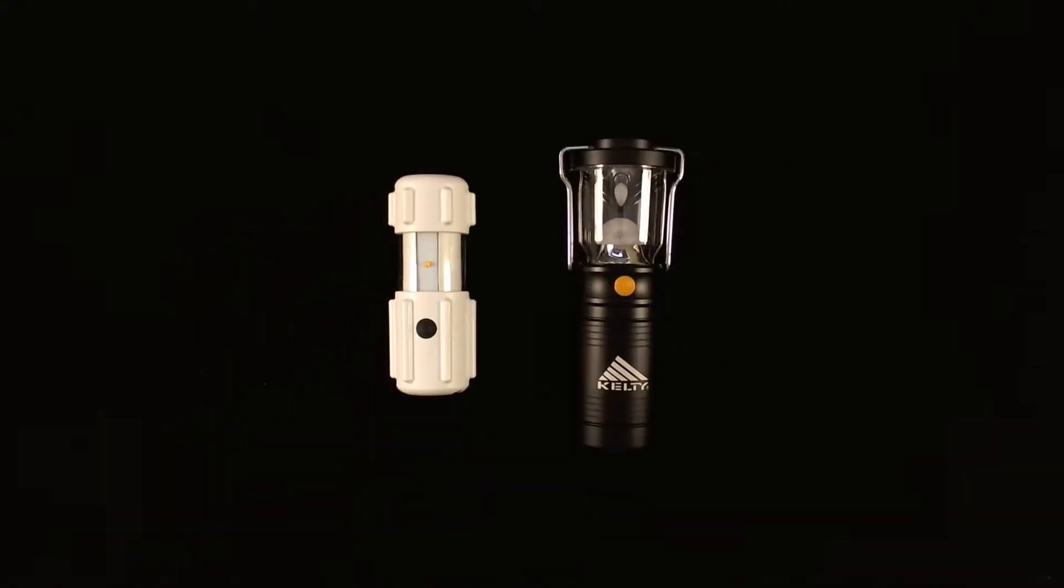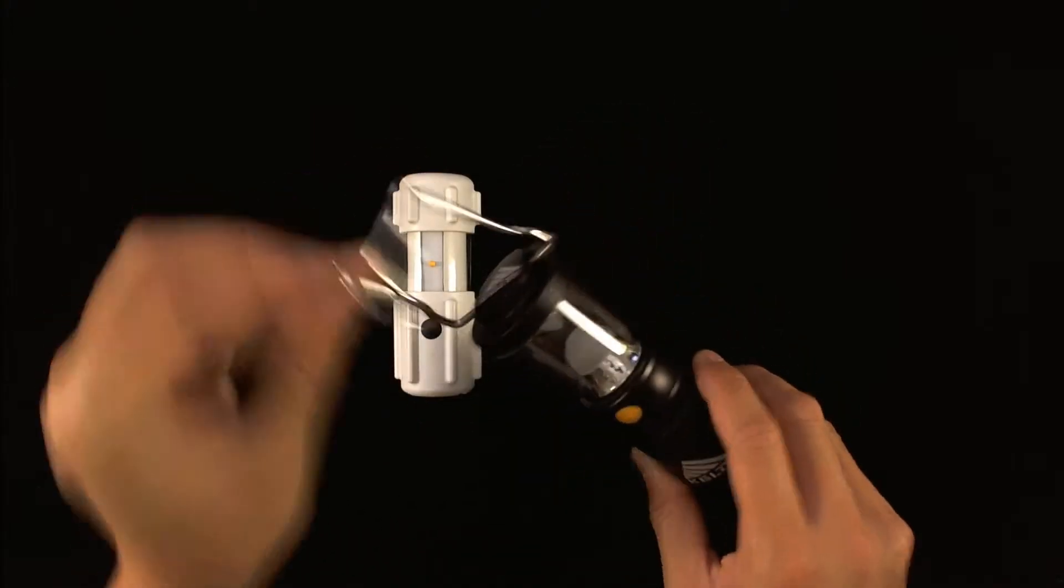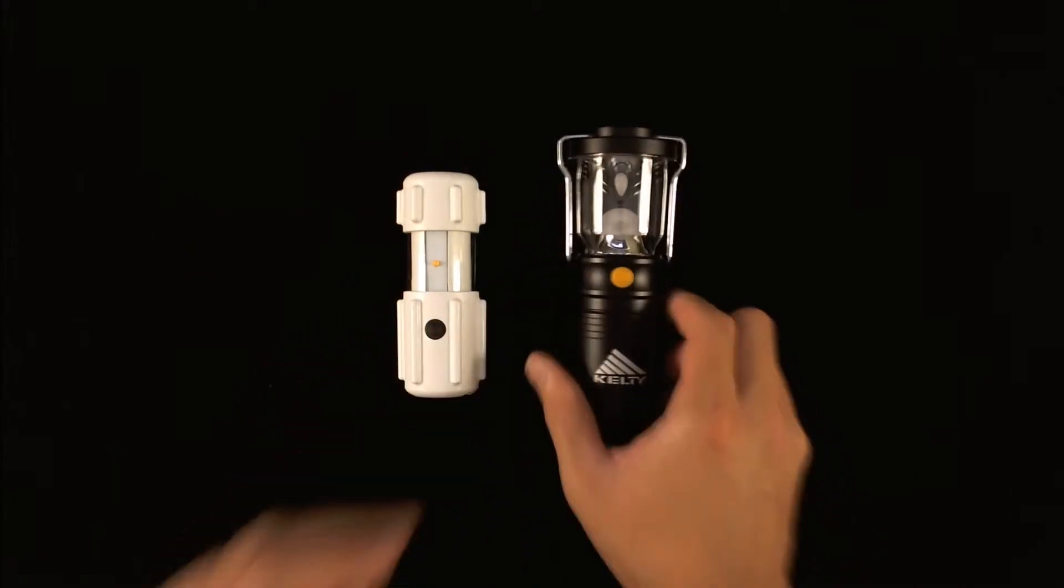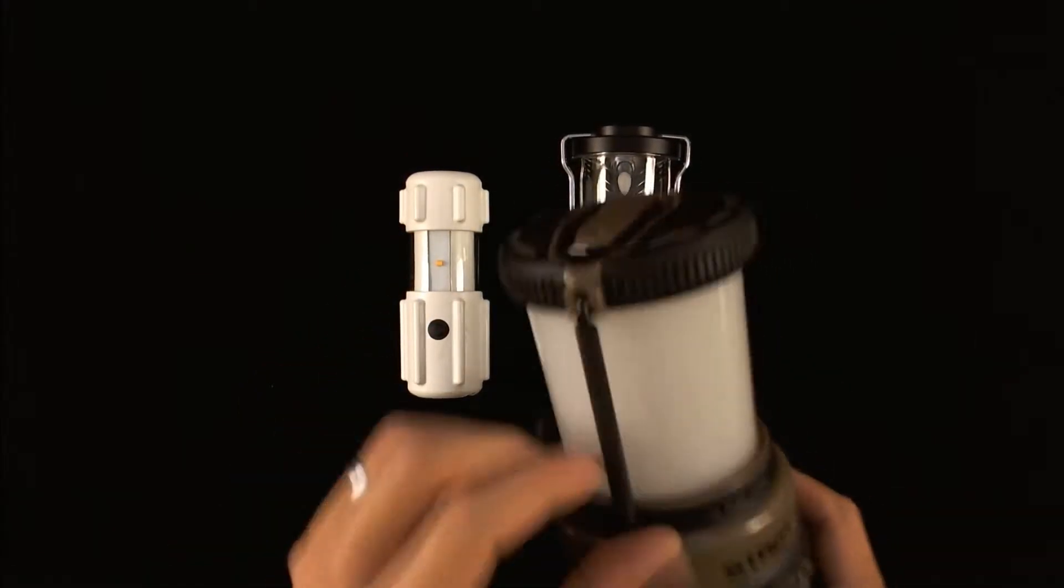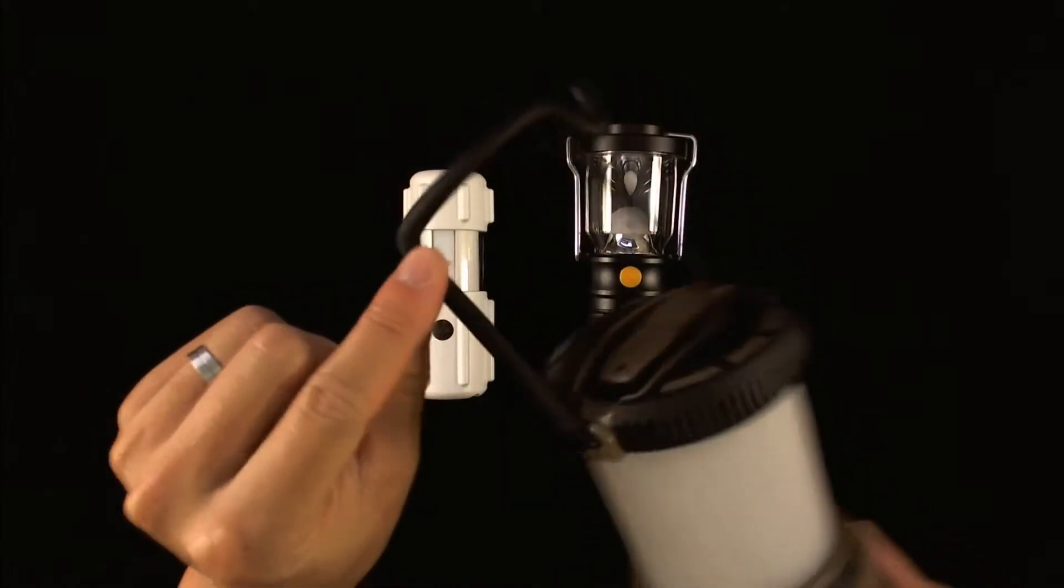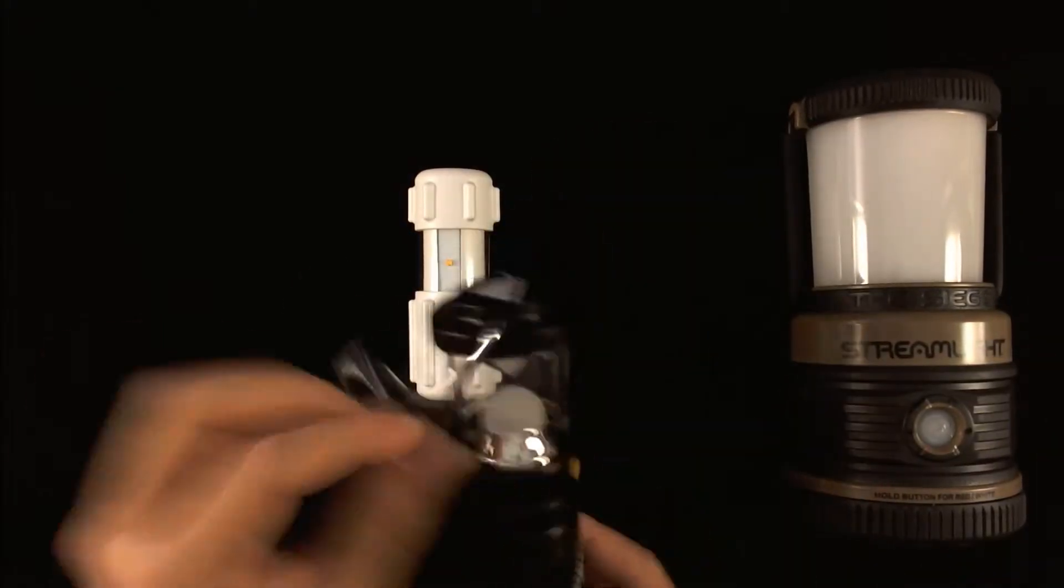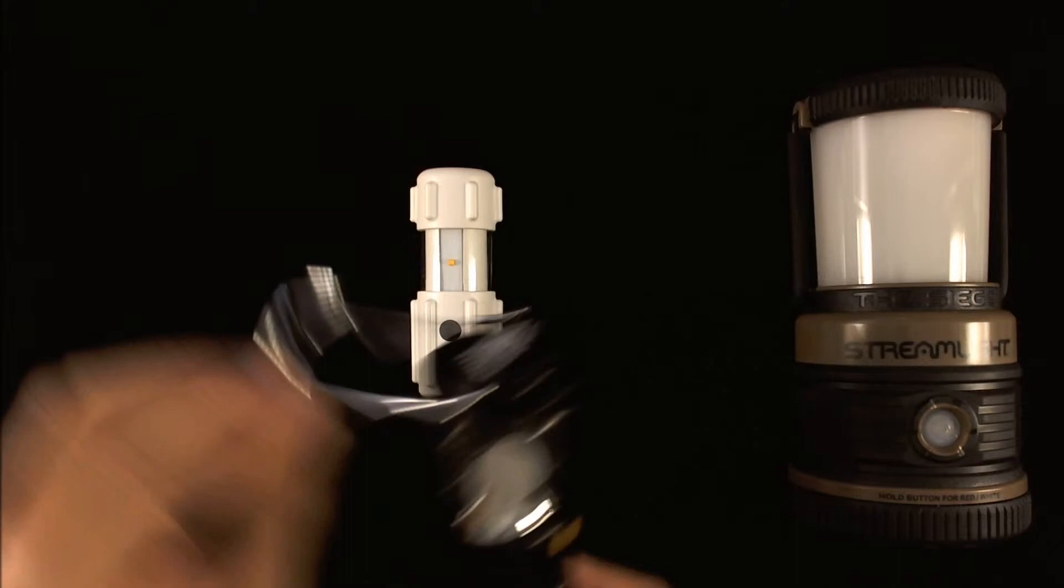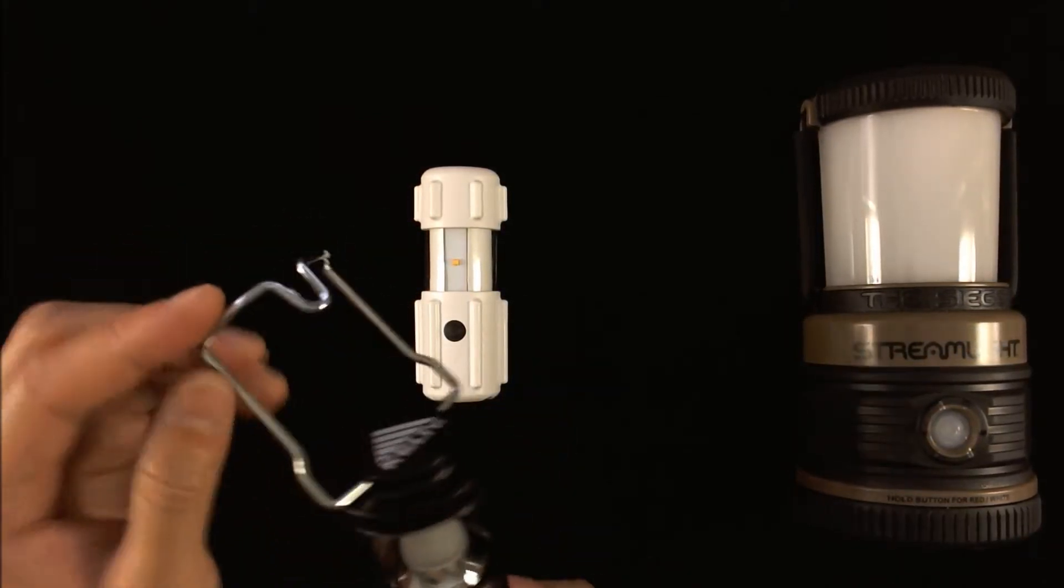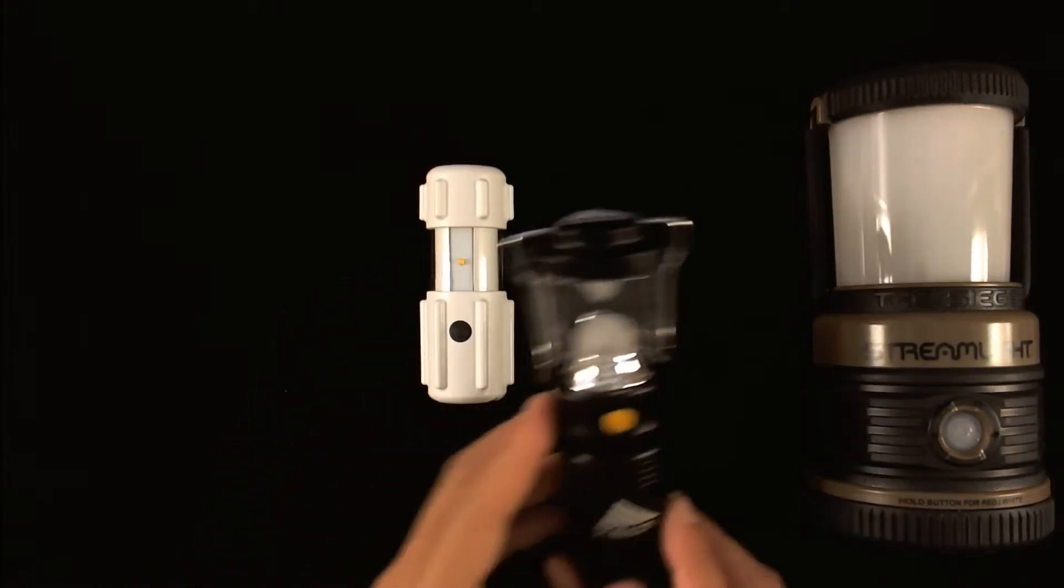For a mounting solution the Kelty Lumatech Lantern has a standard handle hook which is very similar to the Streamlight Siege. Unfortunately the Kelty Lumatech handle is significantly smaller and this could be a little difficult to hang off of a branch or a hook or strap somewhere located in your tent or wherever you're using the lantern.